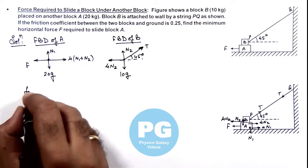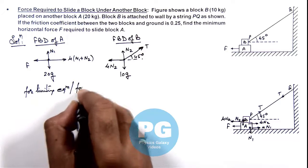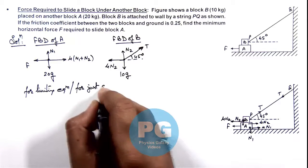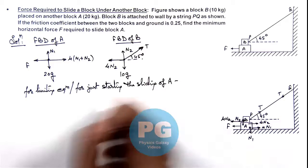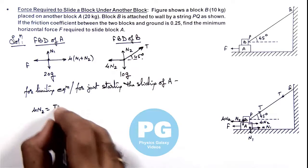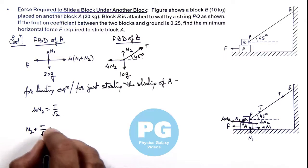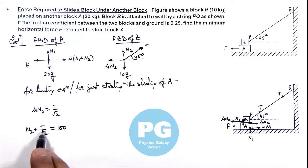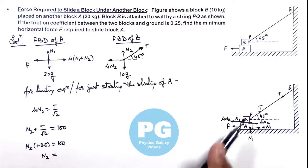For the limiting equilibrium condition, just at the point of starting the sliding of block A, we can balance forces on block B. Horizontally: mu*N2 equals T*cos45, that is T divided by root 2. In the normal direction: N2 plus T/root 2 equals its weight of 100 newtons. Substituting mu as 0.25 gives N2 * 1.25 equals 100, so the normal reaction N2 equals 100 divided by 1.25, which is 80 newtons.